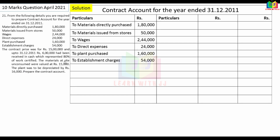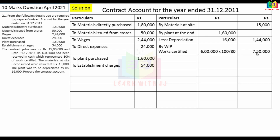The credit side includes: work in progress — work certified, work uncertified, plant at end Rs.1,44,000, and materials on site Rs.15,000. Cash received is Rs.6,00,000 which is 80% of work certified, so work certified = Rs.6,00,000 × 100/80 = Rs.7,50,000. The balancing figure — notional profit — works out to Rs.1,97,000.